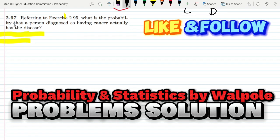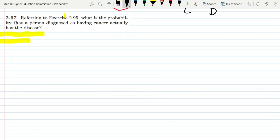Welcome back guys, this is question 2.97 which we have discussed previously that referring to exercise 2.95 what is the probability that a person diagnosed as having cancer actually has the disease.